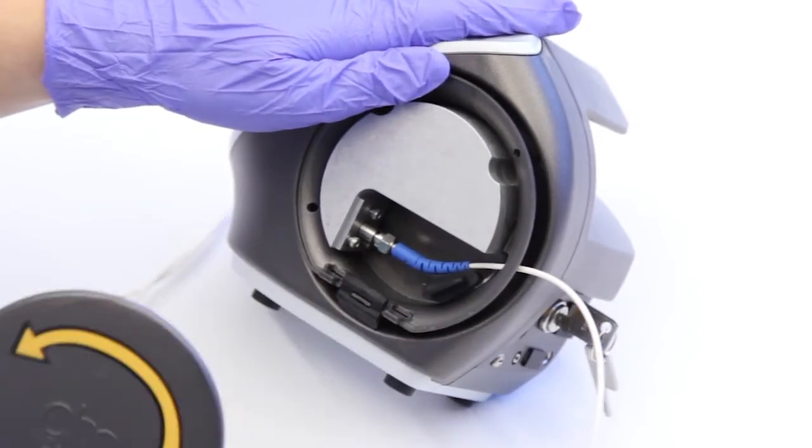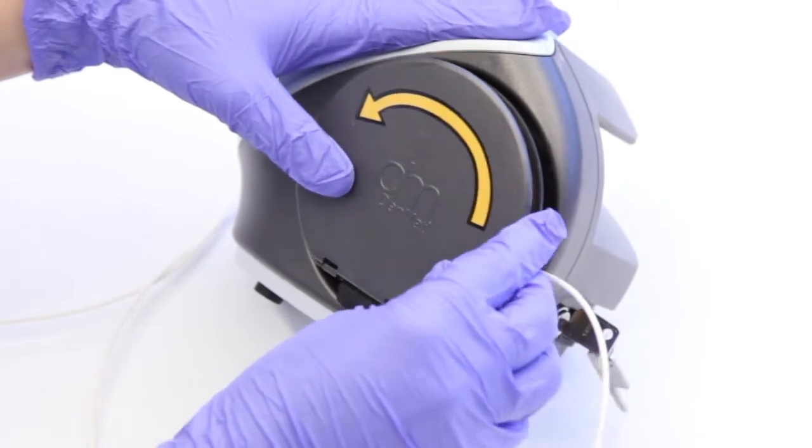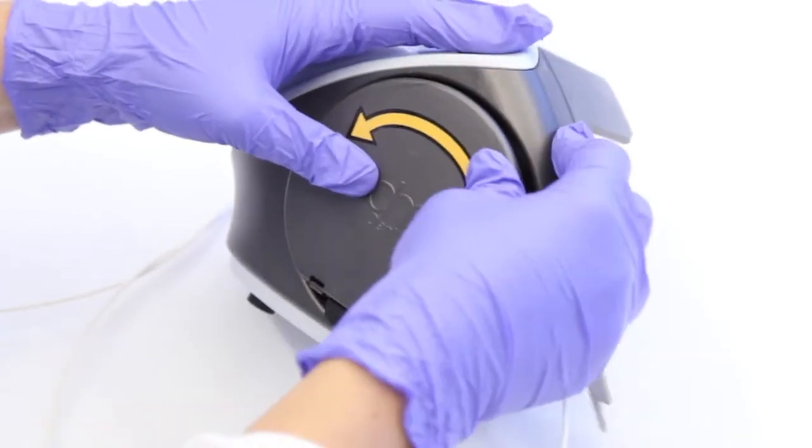Snap the wind cover back into place by placing the lower plastic tabs into their corresponding slots. Then, press the entire piece into place.